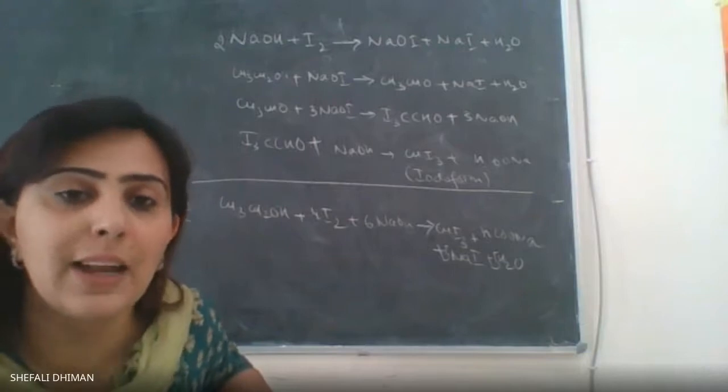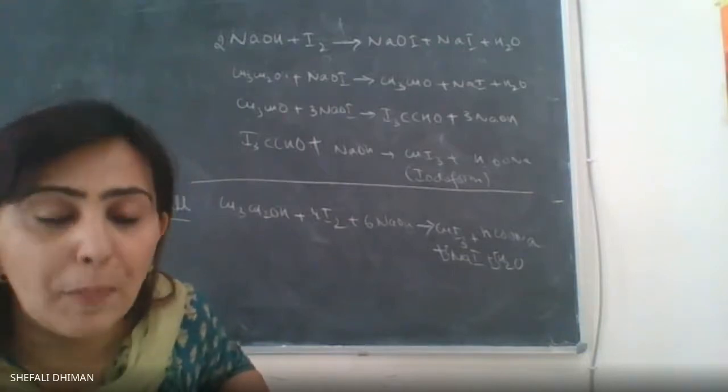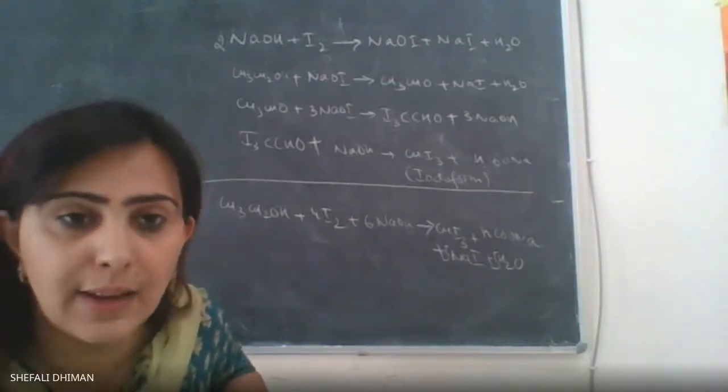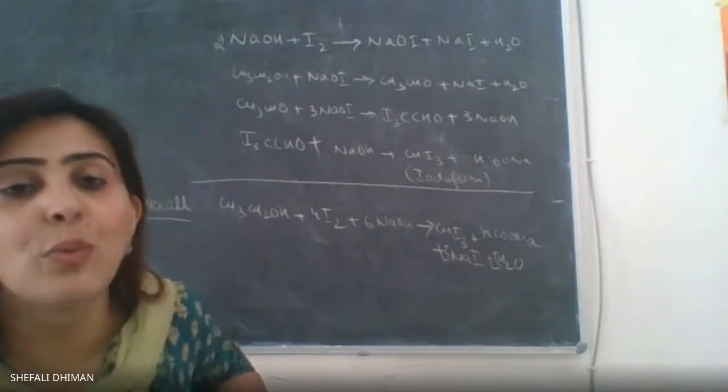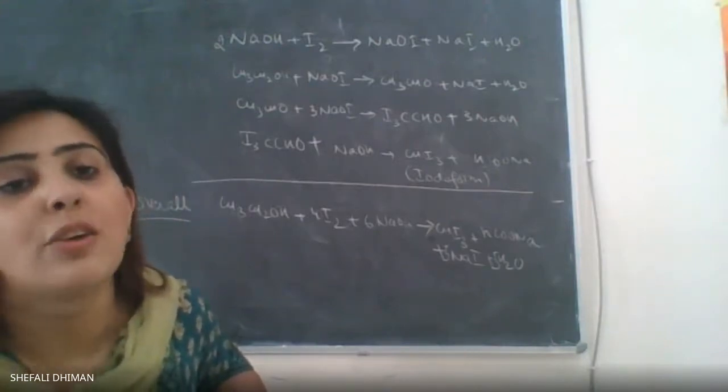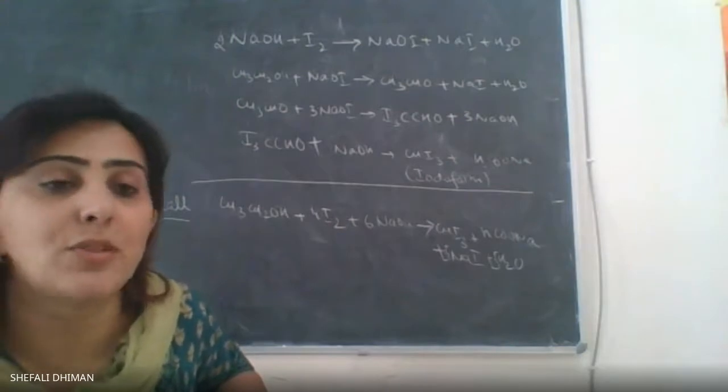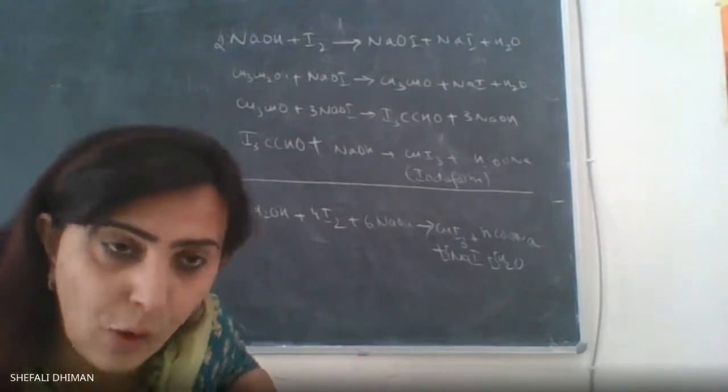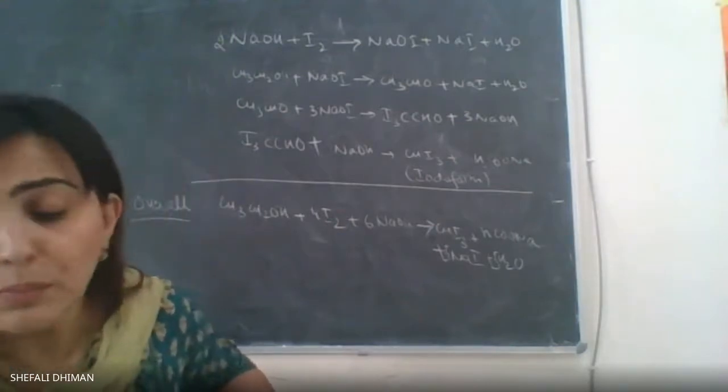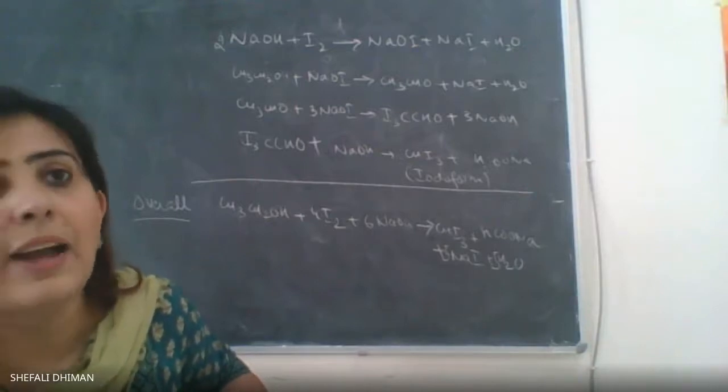You prepare six percent NaOH solution and you will start adding it to your iodine solution which has been dissolved in either ethanol or acetone.